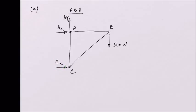The next thing we need to do in a free body diagram is include a coordinate system. I'm going to include a coordinate system with origin at point C, with the x-axis and y-axis. This is my free body diagram.